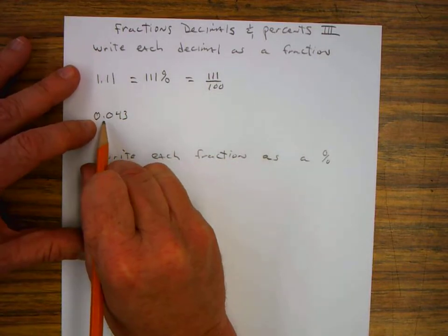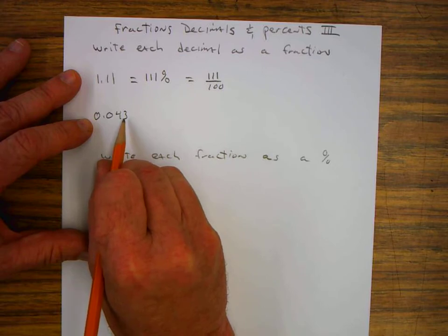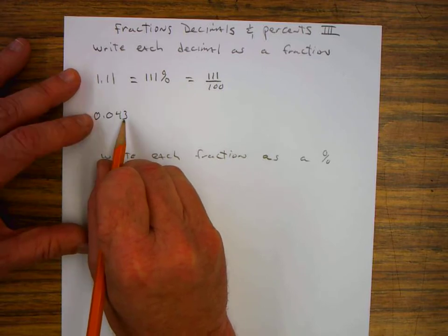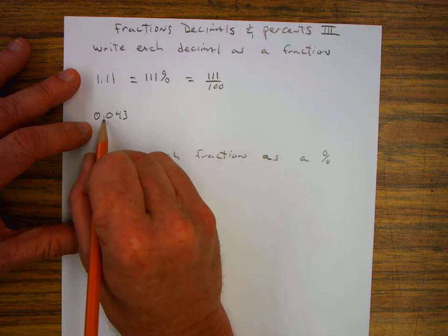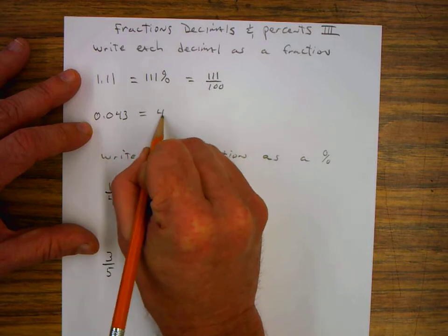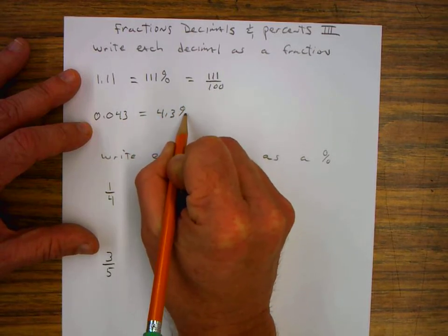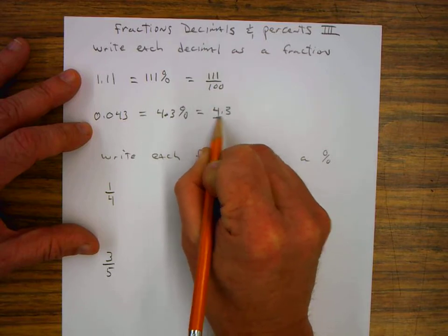I can change 0.043 into a percent and a fraction by moving this decimal two places, tenths, hundredths. So that's equal to 4.3%, which is the same as 4.3 out of 100.